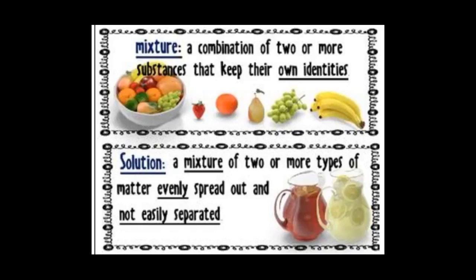A heterogeneous mixture is defined as a combination of two or more substances that keep their own identities. For example, if we put fruits in a bowl, we can still identify and separate them — we call it a heterogeneous mixture. But if we grind them all together into one form, then we call it a homogeneous mixture.